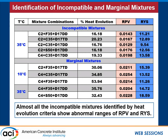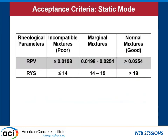Almost all incompatible mixes are identified by heat evolution criteria, matching abnormal ranges of rate of change of plastic viscosity and rate of change of yield stress. Based on all the testing, we developed acceptance criteria. For incompatible or poor mixes, the rate of change of plastic viscosity (RPV) is equal to or below 0.0198. There is also a marginal range, and for normal mixes it should be higher than that threshold. Similarly, acceptance criteria were developed for rate of change of yield stress. Those are the criteria based on static mode.